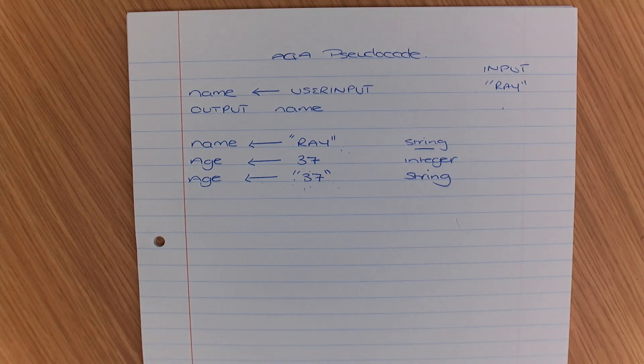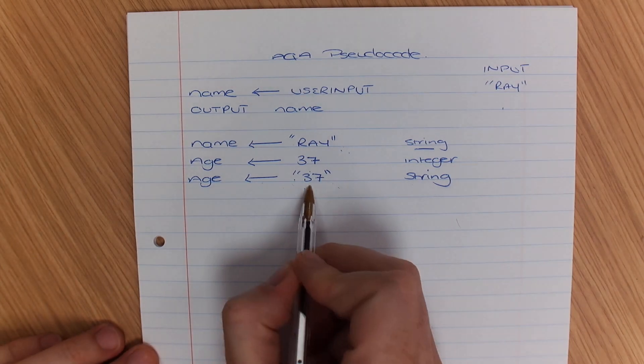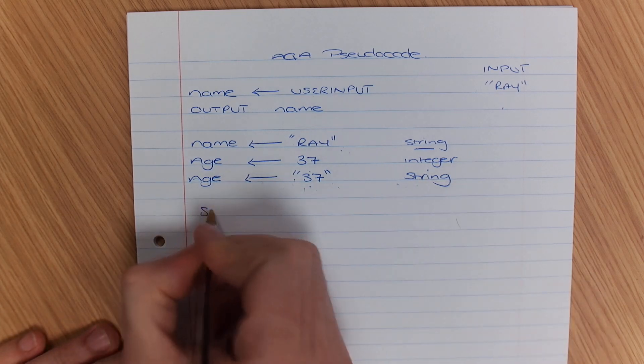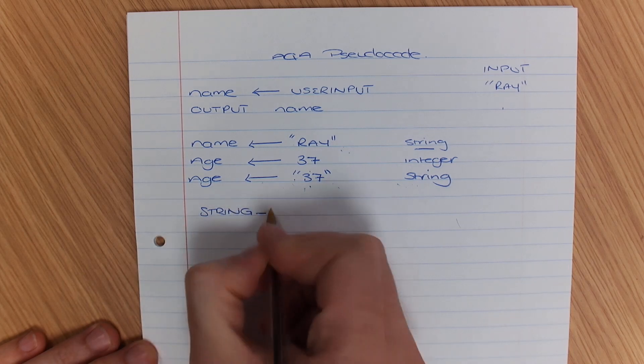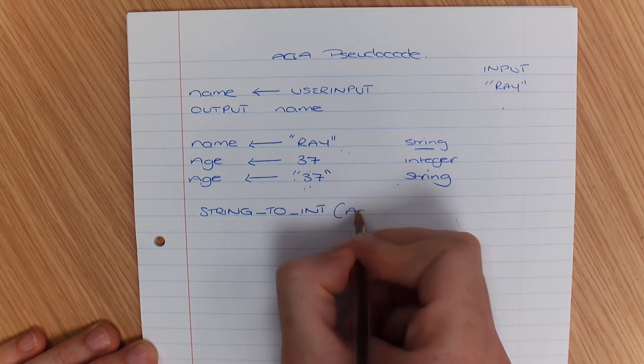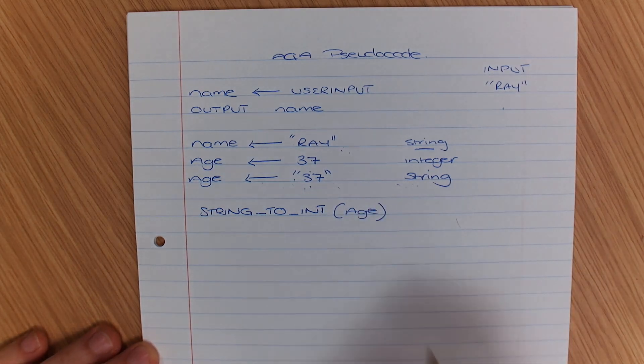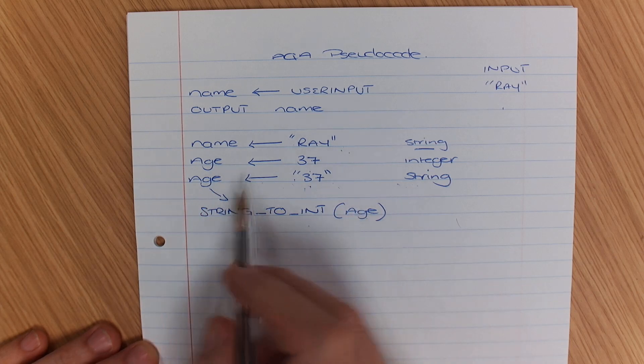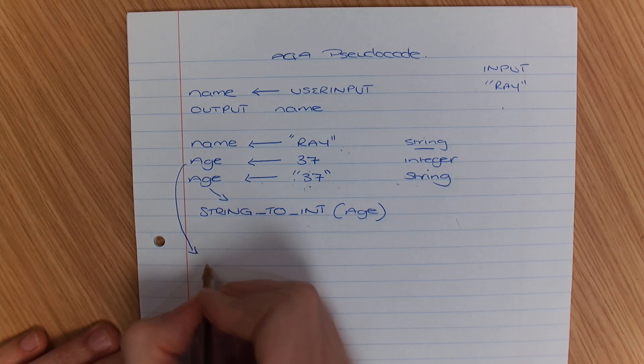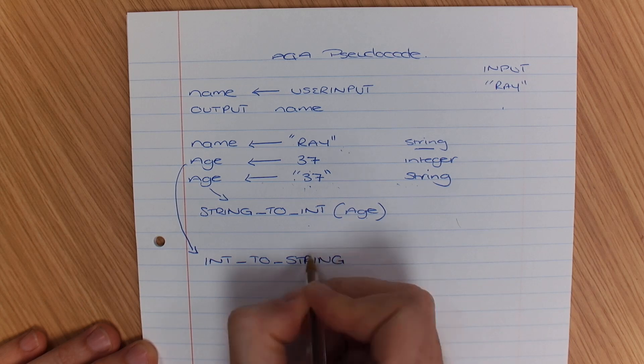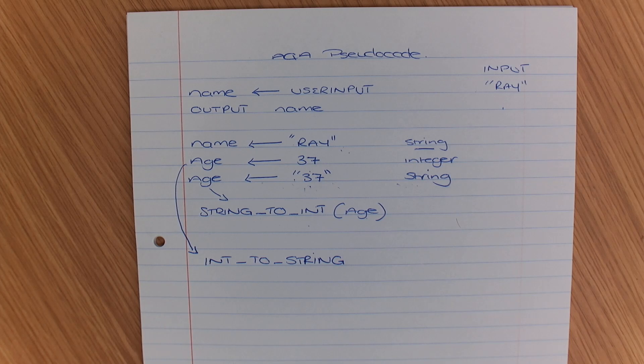So just a quick recap on how to do a conversion. All I need to do is, I know here that this age is a string, yeah? So if I want to convert that, all I need to do is do string underscore two underscore int, and then in the brackets inside that, I can put age. And that does that for me. So if I was wanting to convert that string to an integer, that's all I do in pseudocode. If I wanted to convert this one, it would be int to string. So that's just some recap.